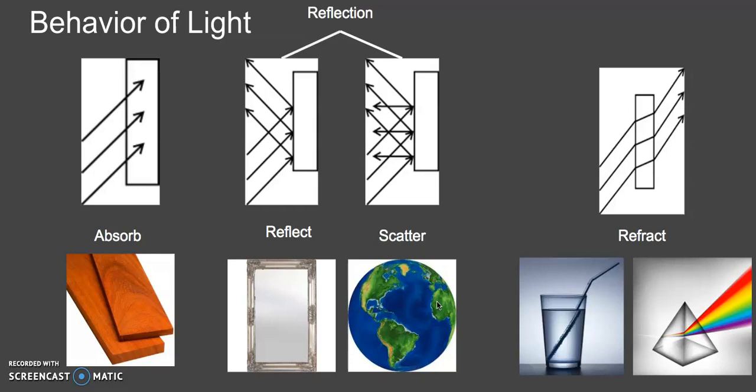We see scattering in instances like with the sky — this is how we see the sky as blue, called the Coriolis effect. This is also why if the sun is shining through a cloud, it doesn't maintain the same intensity as it would. The light scatters through the cloud and we don't see it the same way — it becomes dispersed.